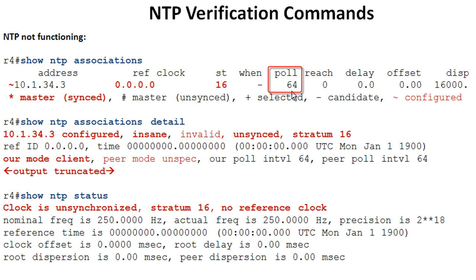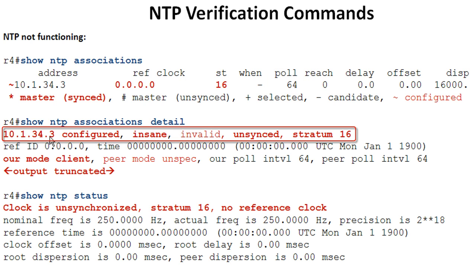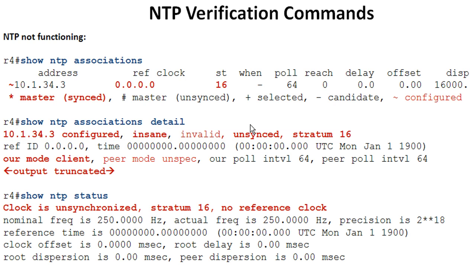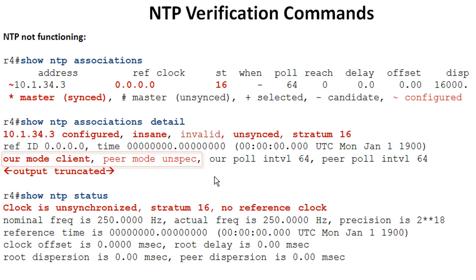Polling stays at 64 seconds because it just keeps asking 'hey, what time is it?' and hears nothing back. In the associations detail, we can see it's configured, but this server is insane — not sane, invalid, and unsynced. The stratum is 16, our mode is client, and peer mode is unspecified. If it had synced, peer mode would show 'server.' That's something to watch when troubleshooting.